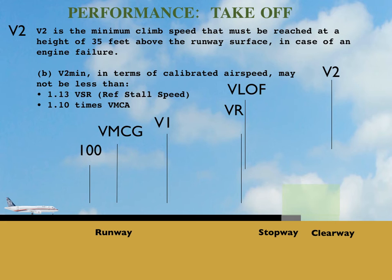I just want to add a small point. In order to achieve V2, the pilot should not lower his attitude and maintain a lower attitude, because in that case he will extend his distance to reach the height of 35 feet since he will get a lesser rate of climb. Therefore it is very important that he exactly reaches V2 at the height of 35 feet.